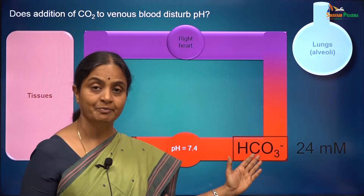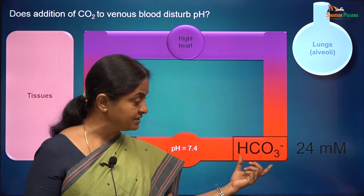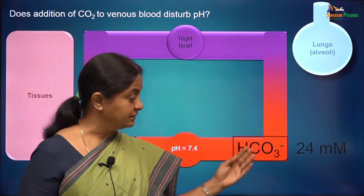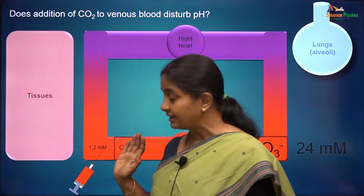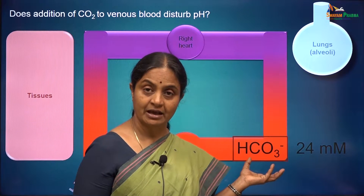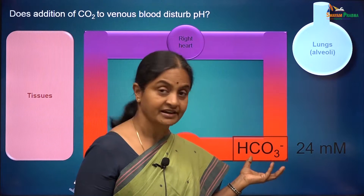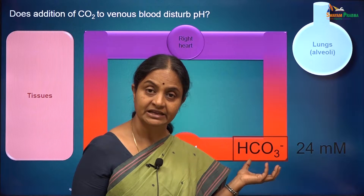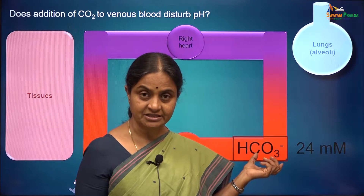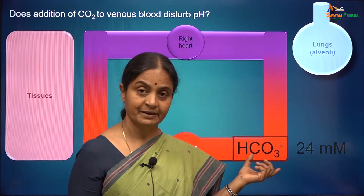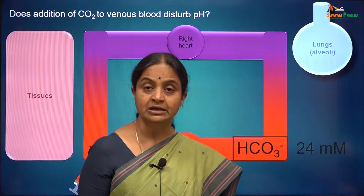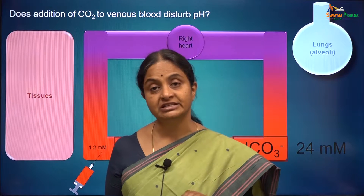The kidneys keep putting out bicarbonate into blood to maintain their concentration so high, and that might result in alkalinization of blood because bicarbonate ions can generate hydroxyl ions and increase the pH. Just like Sajal's experiment, Natarajan, a senior technician, added 24 millimoles per litre bicarbonate to plain water and saw that the pH was 8.6.